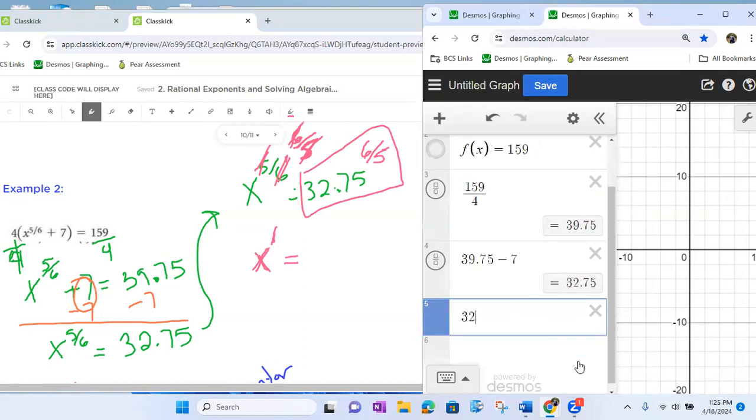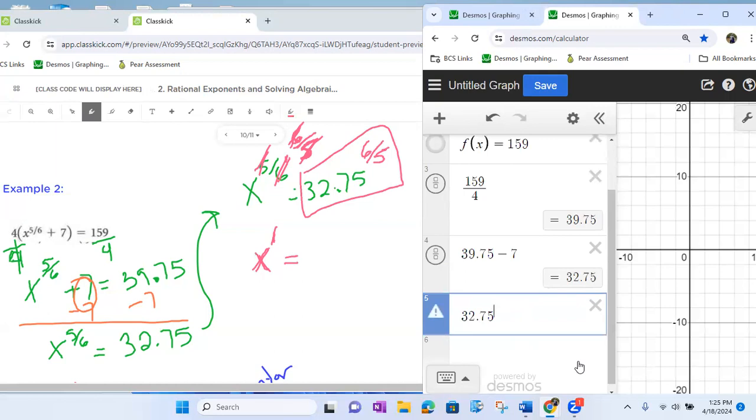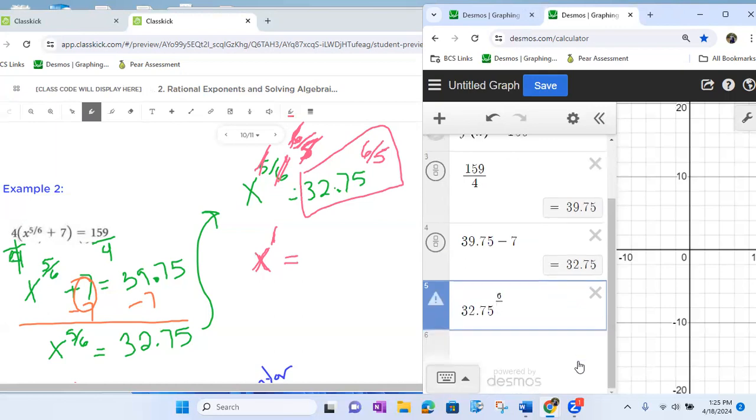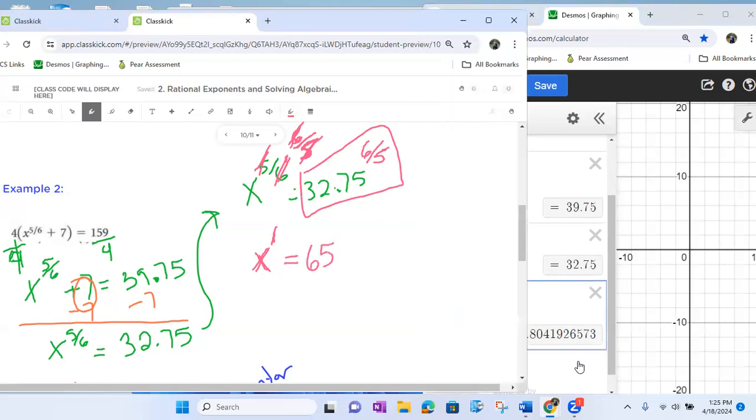And since we've kept a little lineup of solutions over in Desmos, it keeps all of our stuff easy to make those calculations with. So 32.75 to the 6 fifths give us an answer of 65.8, 65.8.